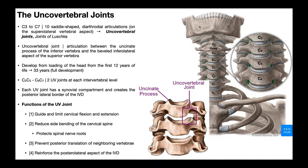At this point in the playlist, we've talked about the facet joints, also called zygapophyseal joints, and the intervertebral joints. The uncovertebral joint is probably new to most people. It's a result of the formation of something called an uncus, or uncinate process as it's often termed, on cervical vertebrae C3 through C7.